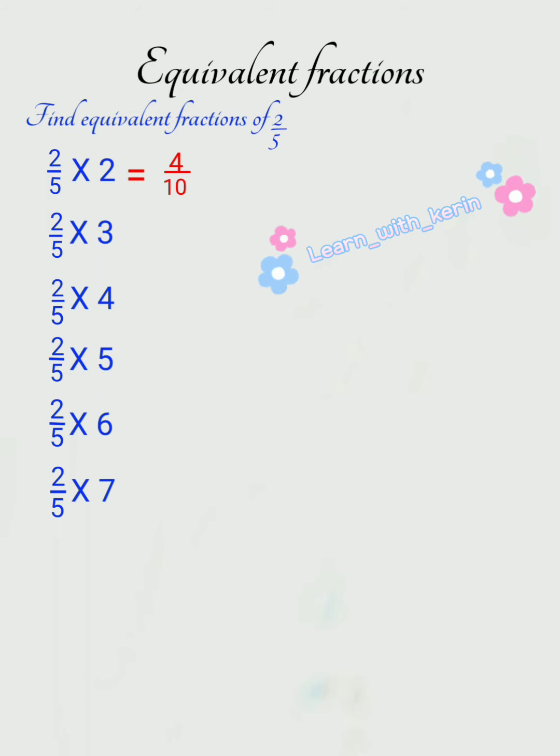Next, let us multiply 2 by 5 with 3. 2 3's are 6, 5 3's are 15. So, our second equivalent fraction is 6 by 15.